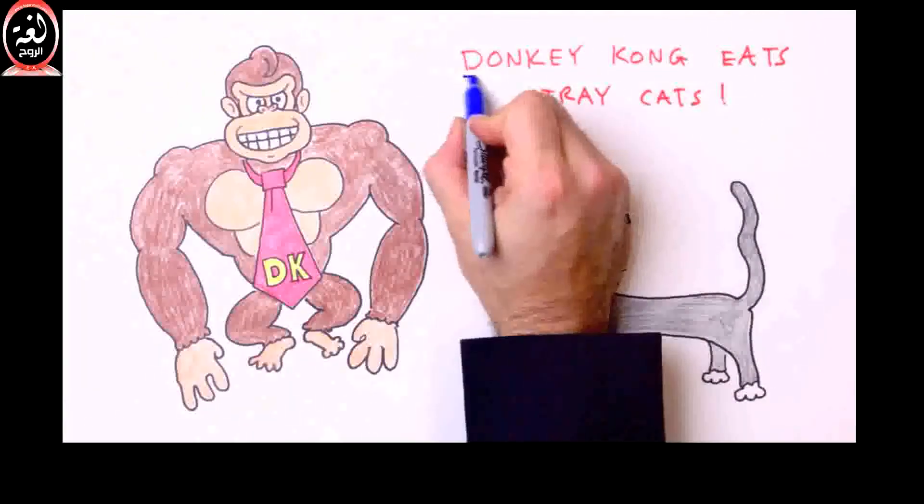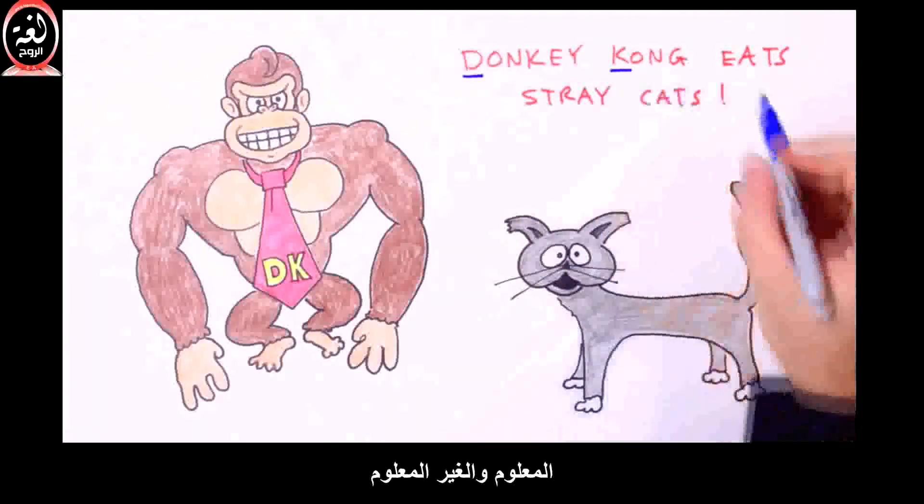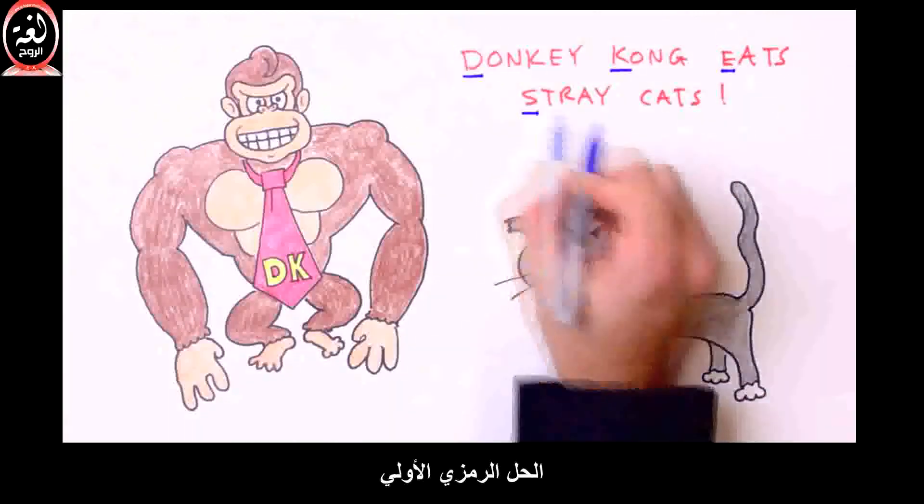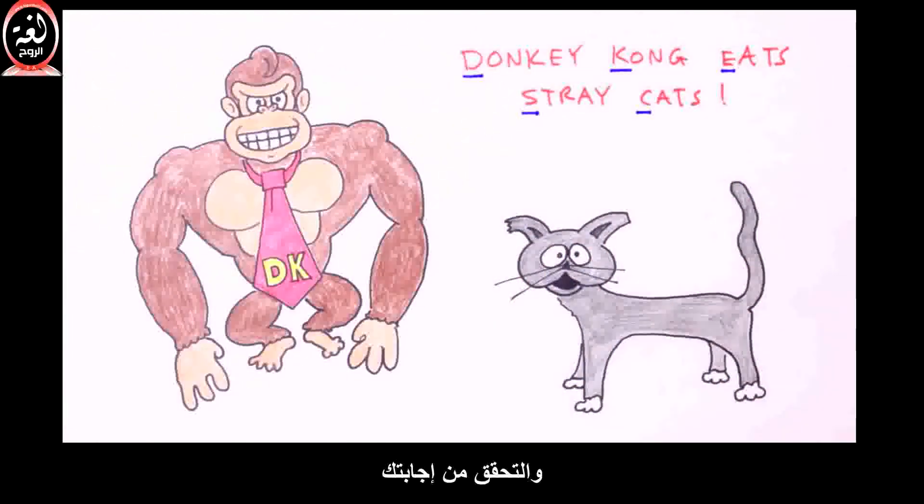So there it is. Draw a picture, knowns and unknowns, equation, solve symbolically first, and check your answer. Donkey Kong eats stray cats.